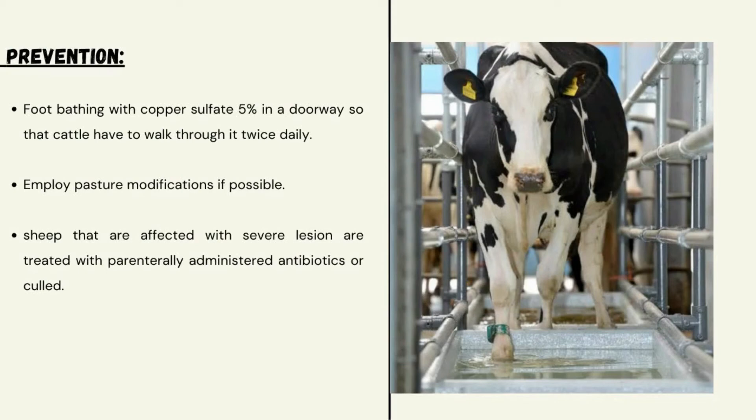Prevention of foot rot: foot bathing with copper sulfate five percent in a doorway so that cattle have to walk through it twice daily is recommended. Employ pasture modification if possible. Sheep affected with severe lesions are treated with parenterally administered antibiotics, or in severe cases must be culled.